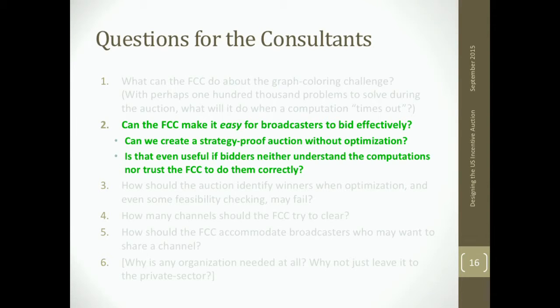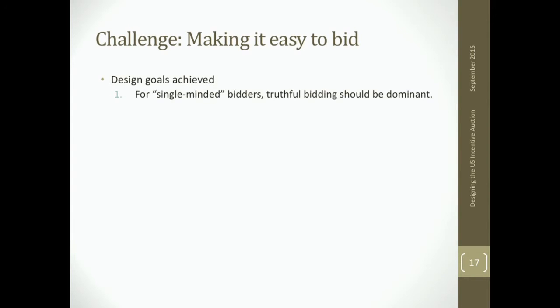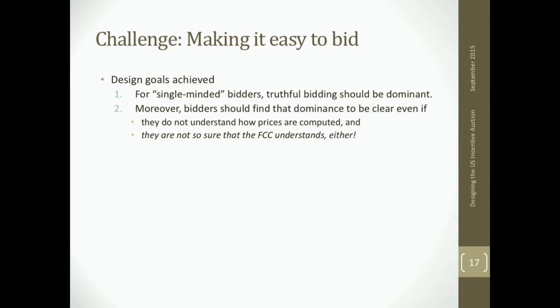The solution is the descending clock auction format. For single-minded bidders who are either going to keep or sell their station, it should be a dominant strategy to bid straightforwardly — and moreover, the bidder should find that dominance to be clear even if they don't understand how the prices are computed, and even if they're not sure the FCC understands either. Here's how it works: your station is worth eight million dollars. The FCC offers you forty-five million at opening. Prices fall each round. If at forty-two million you say no, you're out and keep your station. If yes, you might get that or face a lower offer.